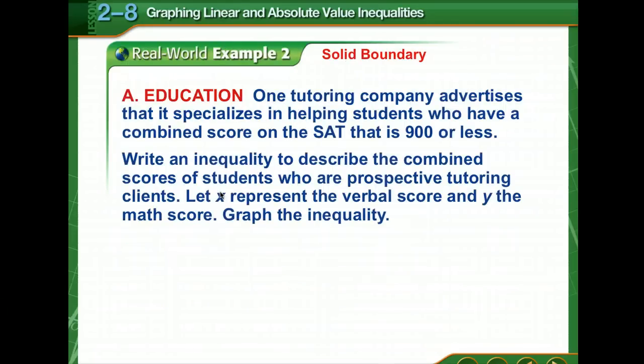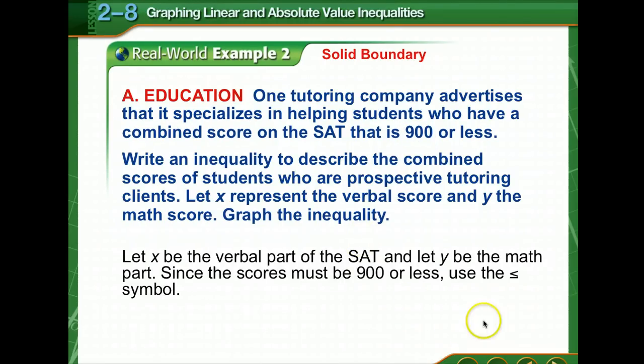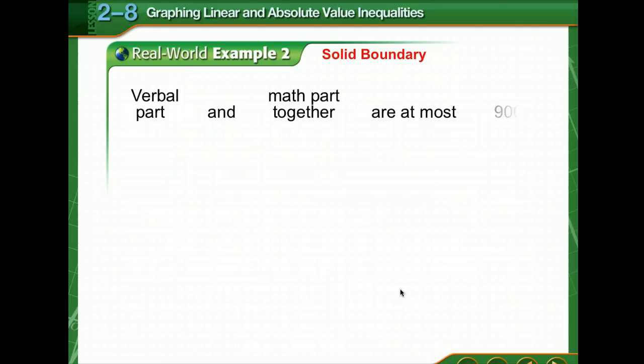Okay, a real world example. I'll let you pause for just a moment and read this. We've got to write an inequality and graph it. Okay, good job. So we're going to let x represent the verbal score and y the math score, and we know that because it's 900 or less, we're going to use the less than or equal to symbol. So the verbal part and the math part together are at most 900. So there's our inequality.